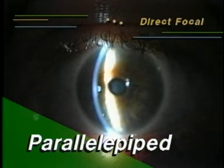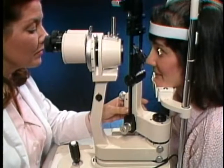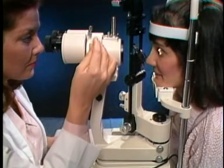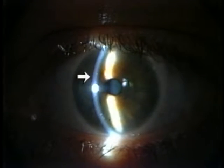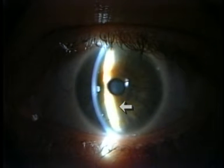A diffuse illumination changes to a parallel piped by narrowing the slit lamp beam to about one to two millimeters. The light source and microscope remain about 45 degrees apart, with magnification generally low to medium. The narrowed vertical slit is focused on the corneal surface, and the light beam continues through the anterior chamber to fall on the iris. This illumination is useful for a general survey of the corneal layers as well as viewing scars, abrasions, and corneal nerves.